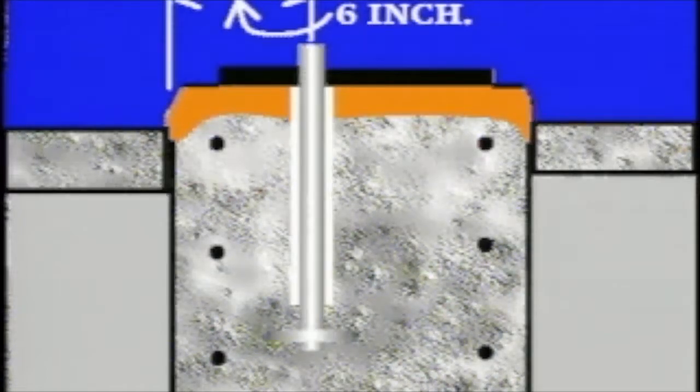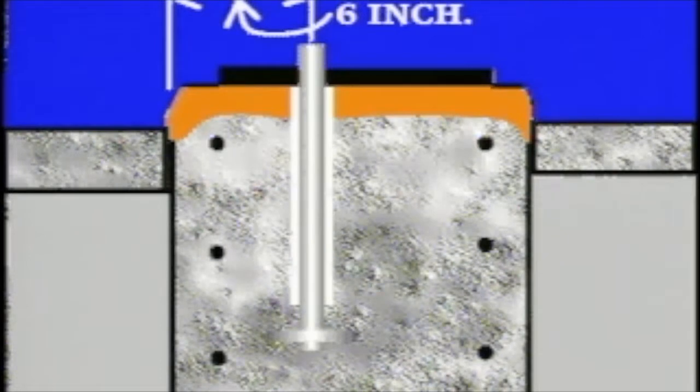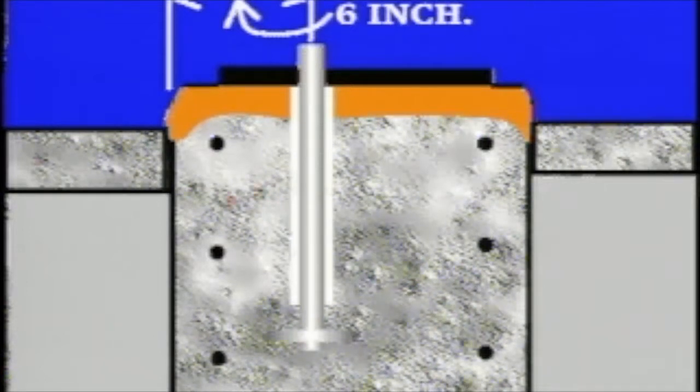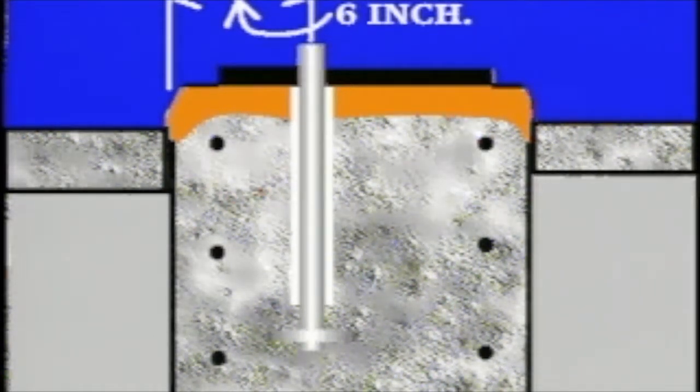The anchor bolts should be installed at a minimum of six inches from the outside vertical face of the foundation. If they are installed less than six inches from the vertical face, they should be encased in a spiral wound rebar cage.